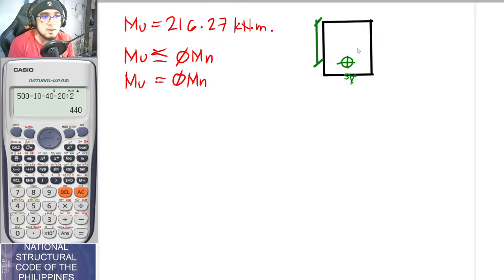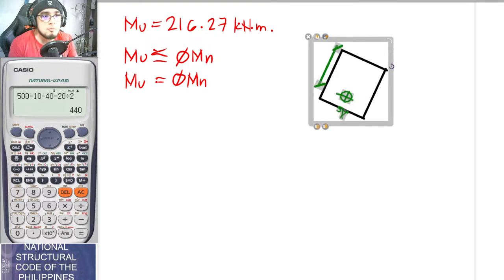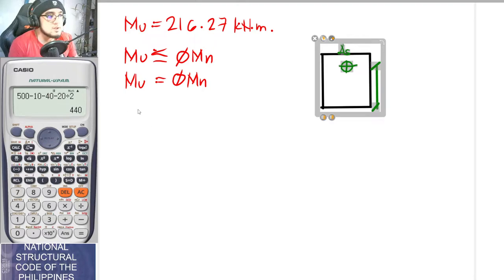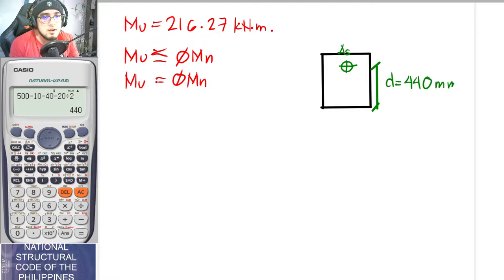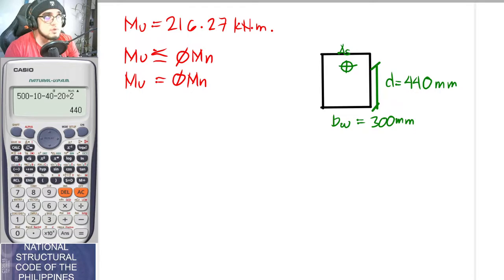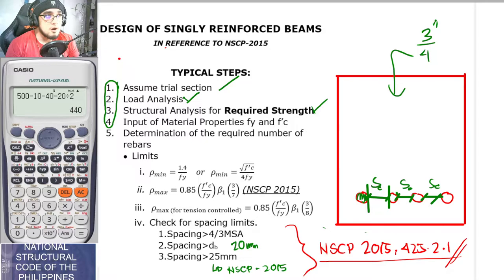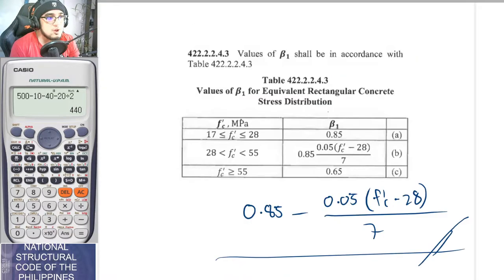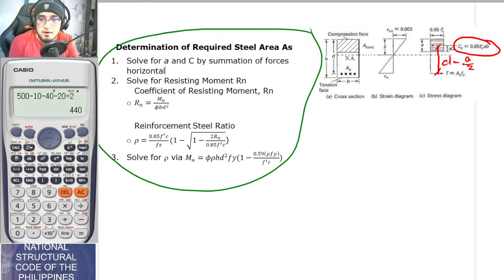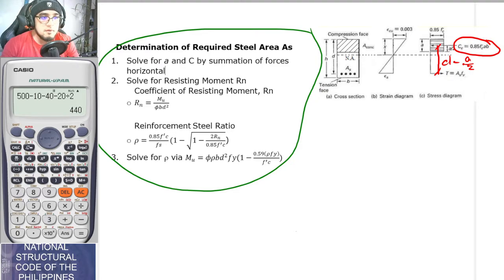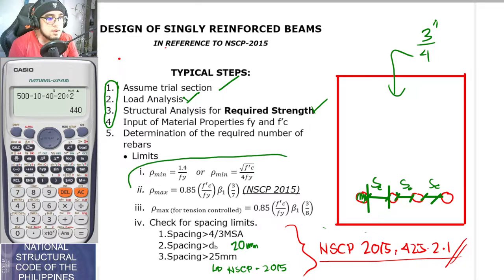For us to determine the required steel area AS, we will use any of three methods. But before that, let us check ρ_min and ρ_max. For ρ_min, use the greater of 1.4/f'y or √(f'c)/(4·f'y). These give 1.4/420 = 0.00333 and √28/(4·420) = 0.00315. Use 0.00333 as ρ_min since any value greater than 0.00333 is automatically greater than 0.00315.